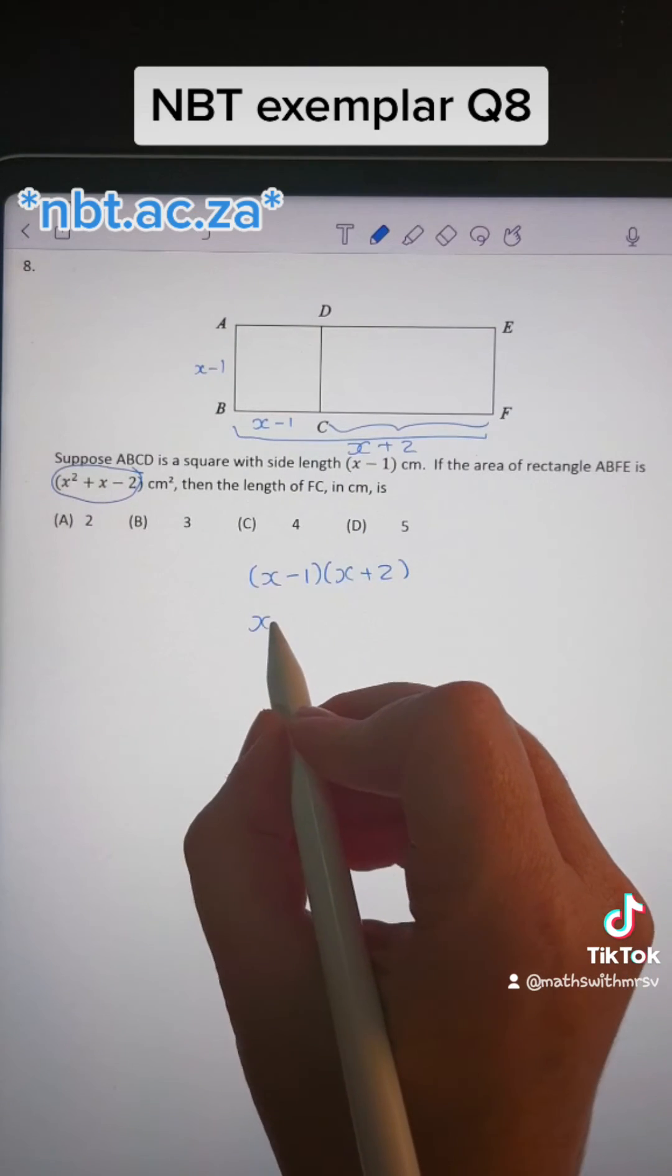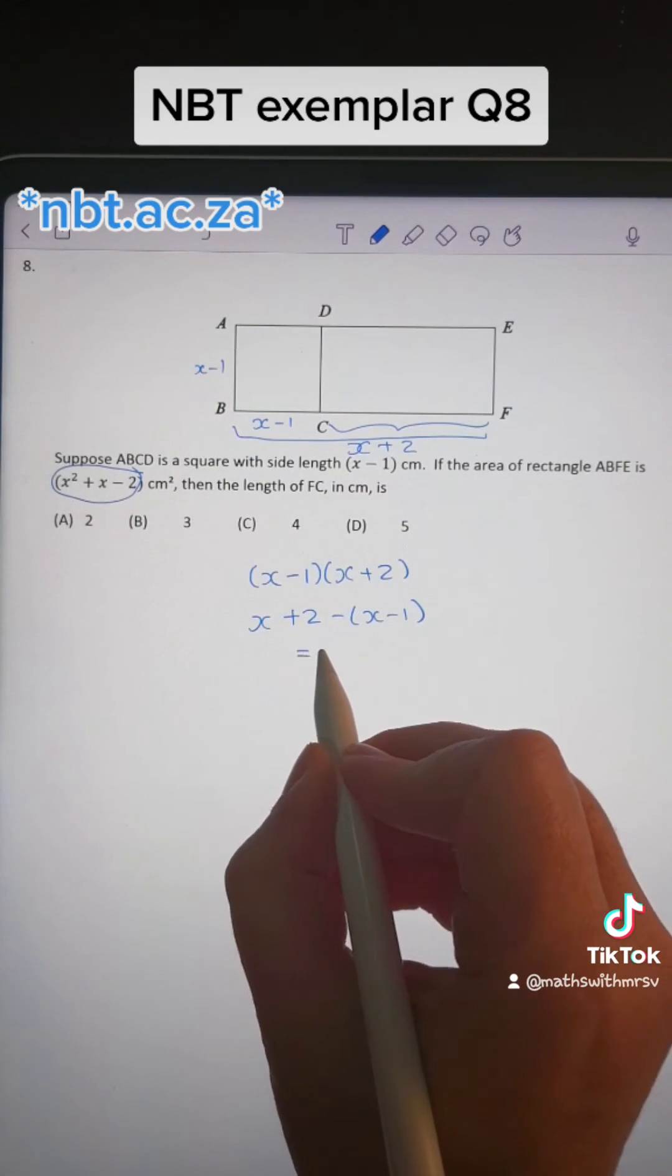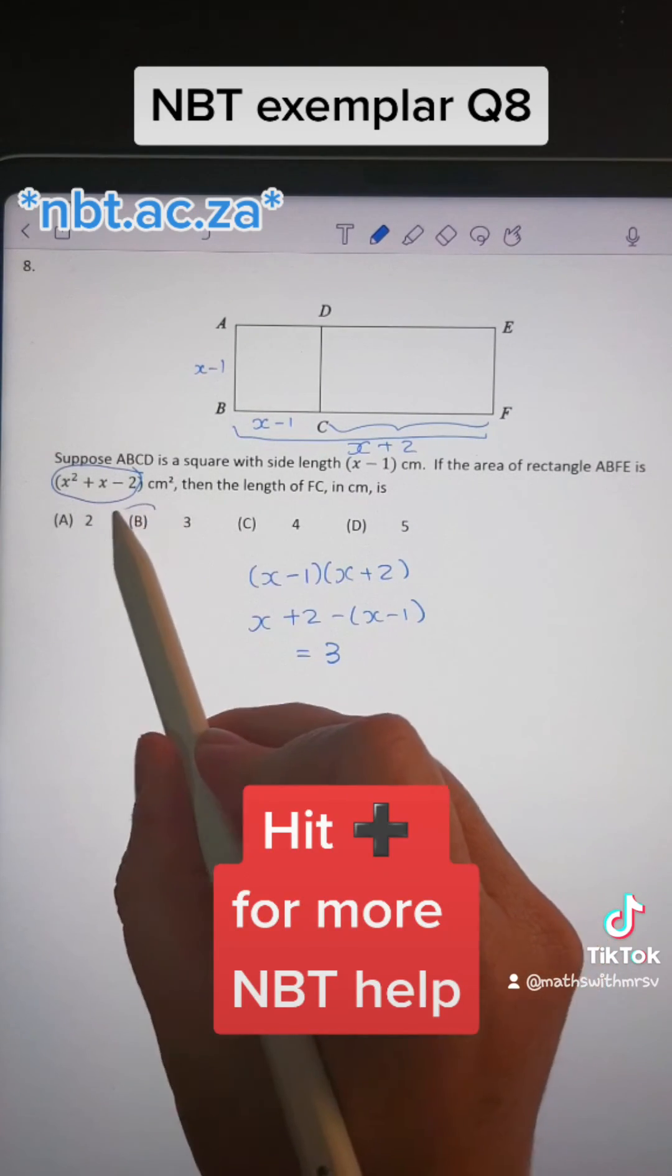We can do that by saying x plus 2 minus x minus 1, and that just gives us 3. That means that the answer is B.